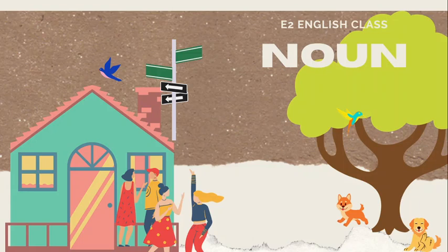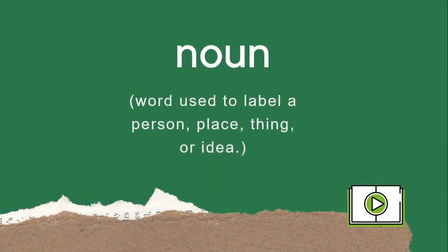Hello, good morning. Today we're going to learn English grammar, and it's about noun. As you know, noun is one of the parts of speech in English. But what is a noun? A noun is all words that are used to label a person, place, thing, or idea. I will give examples.